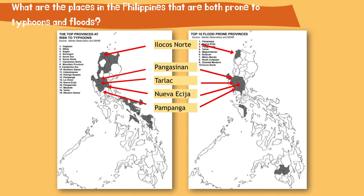For question number 1, the places in the Philippines that are both prone to typhoons and floods, according to the hazard maps given, include Pampanga, Nueva Ecija, Pangasinan, Tarlac, and Ilocos Norte. For the second question, what is the importance of using a hazard map? A sample answer: a hazard map provides important information to help people understand the risks of natural hazards and to help mitigate disasters.